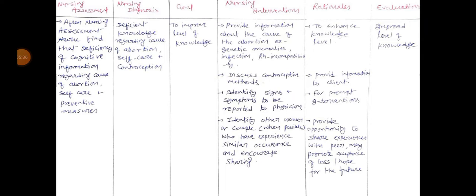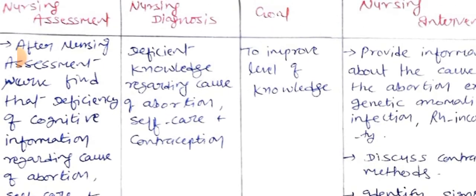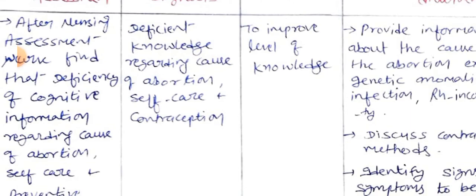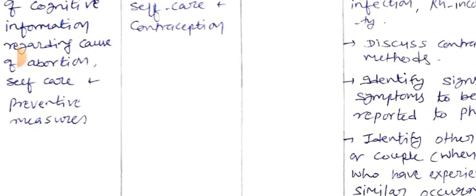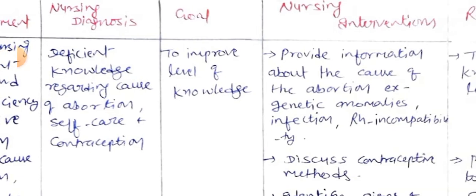The second nursing diagnosis is: deficient knowledge regarding the cause of abortion, self-care, and contraception. After assessing the patient, the nurse finds a deficiency of cognitive information regarding the cause of abortion, self-care, and preventive measures. The clients have no knowledge or only limited knowledge about abortion, its causes, treatment, and different types of abortion. The nursing diagnosis is therefore deficient knowledge regarding cause of abortion, self-care, and contraception.